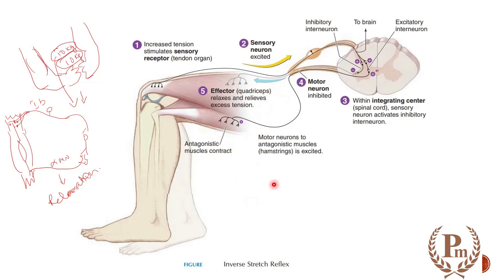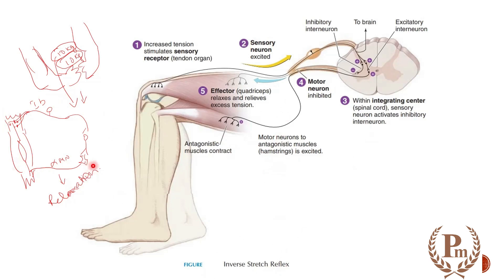Reciprocal inhibition facilitates rapid movement. If you want to understand a pure form of inverse stretch reflex, the reflex pathway without involving antagonist muscles explains it better, showing the dual role of impulses from the Golgi tendon organ.